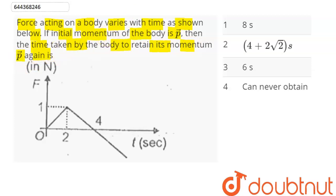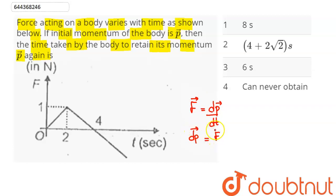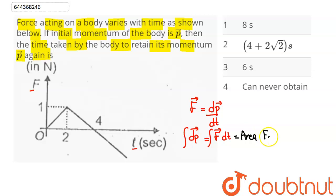According to Newton's second law of motion, force is equal to the rate of change of momentum. So we can say dP vector equals F·dt. Therefore, the area under the force versus time graph represents the integral of F·dt, which represents our change in momentum.